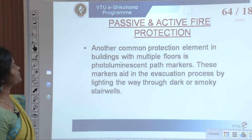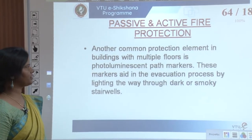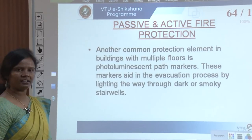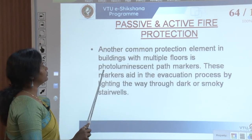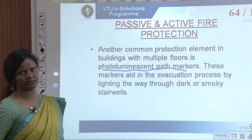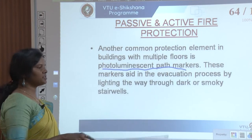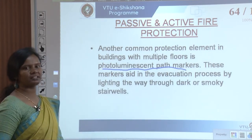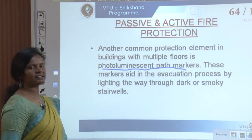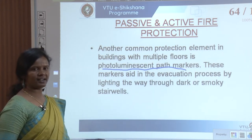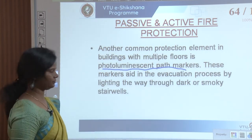Another common protection element in buildings with multiple floors is photoluminescent path markers. These markers aid in the evacuation process by lighting the way through dark and smoky stairwells. We can add path markers on the floors which are photoluminescent — like a radium kind of marker — which defines the paths even when the space is covered with smoke and darkness, showing you the path to the fire exit.